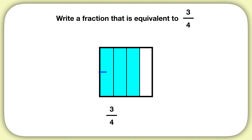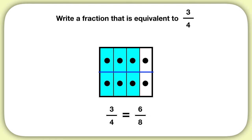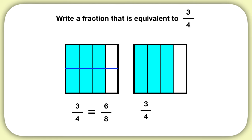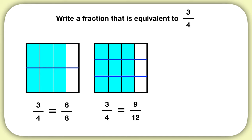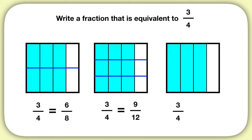I can make an equivalent fraction by breaking this model up into equal sections. When I do this, what fraction have I created? I've created the fraction six over eight. Let's do another one — let's draw another model of three-fourths and split it up into three equal sections. What fraction is this? This is the equivalent fraction nine over twelve. And let's do one last one: if I draw a third model of three-fourths and split it up into four equal sections, this would give me the equivalent fraction twelve over sixteen.